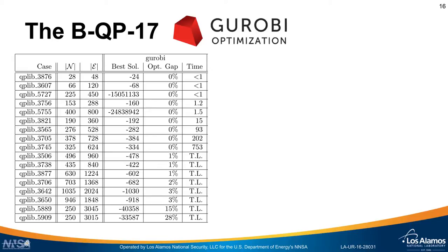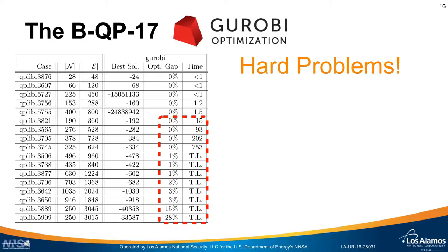Let's look at the results of these 17 cases when we put them into Gurobi. What you're seeing here is the case identifiers, the number of variables in each case, the number of interactions between variables (the edge set), the best solution found, the optimality gap when a time limit of one hour has been reached, and then the total runtime before convergence. The good news is that for an interesting subset of these, they are very challenging problems — which would be quite fascinating if the D-Wave hardware could solve them.